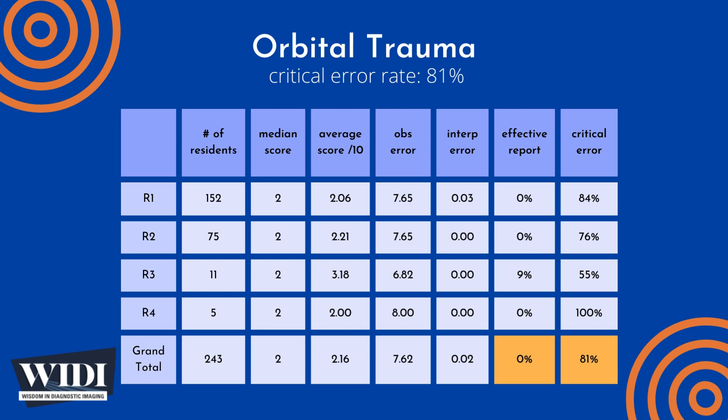We define an effective report to be one which achieves scores between 7 and 10 — in terms of letter grades, this would be an A or a B. In this most missed case, 0% of residents produced effective reports.